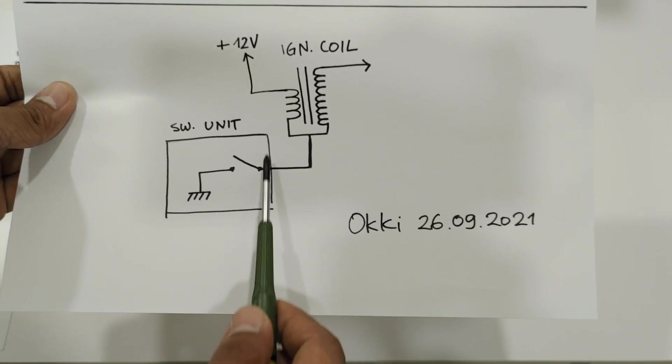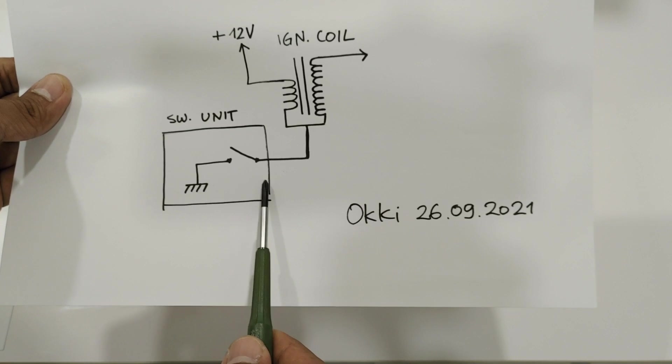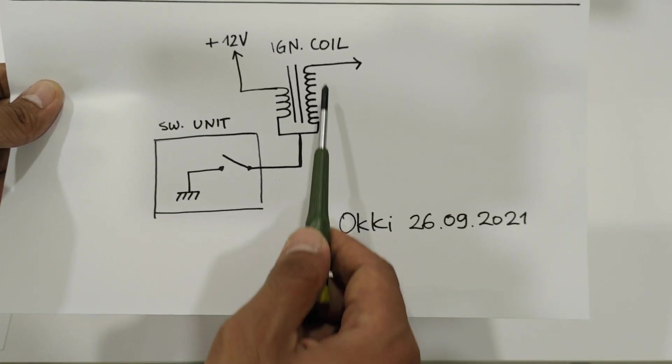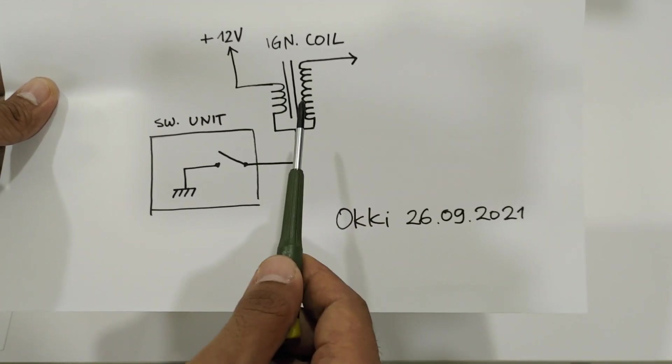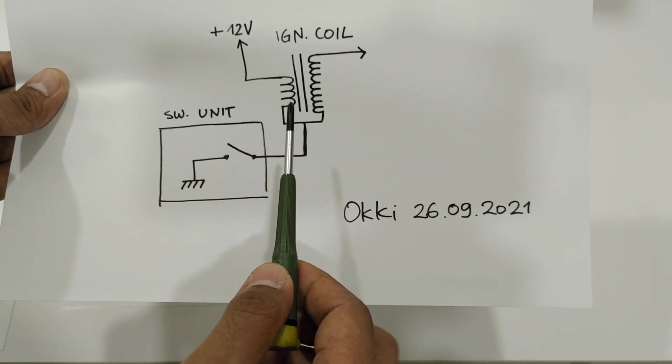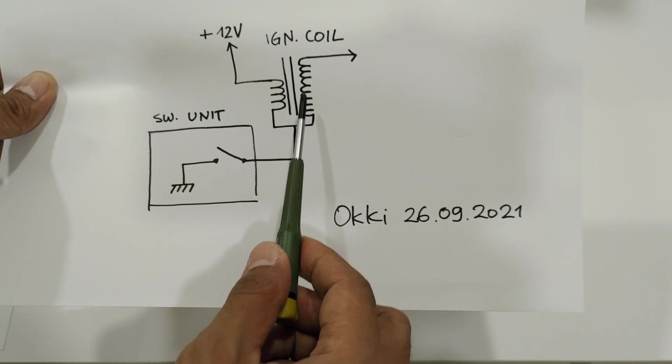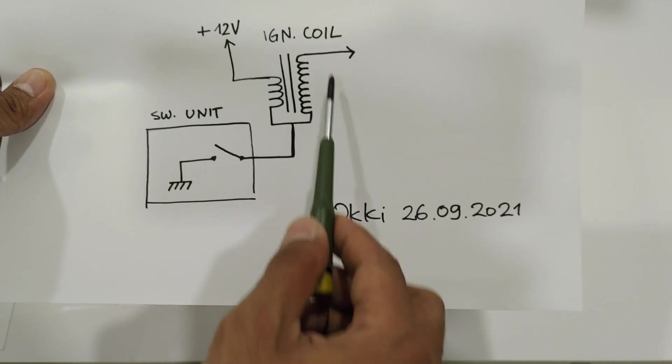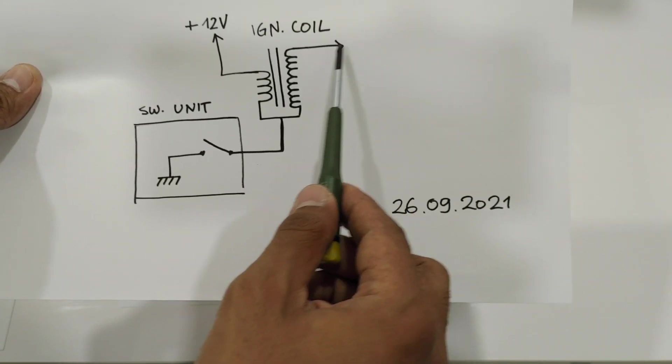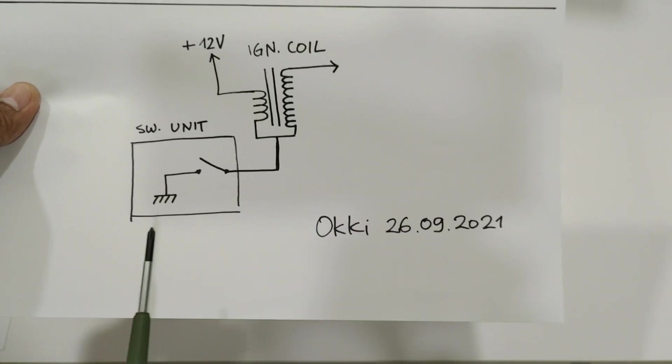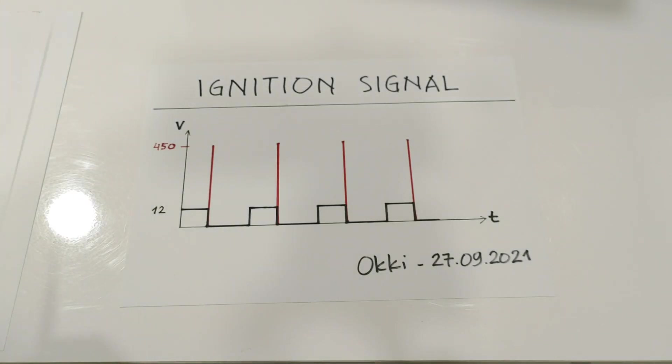And if the switch is open, the magnetic field will collapse and the ignition coil will output the high voltage.